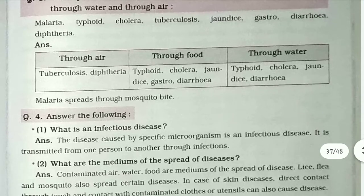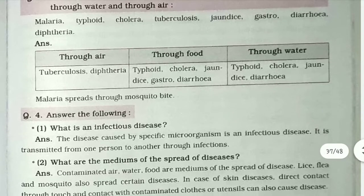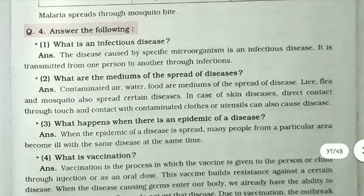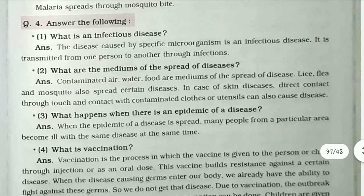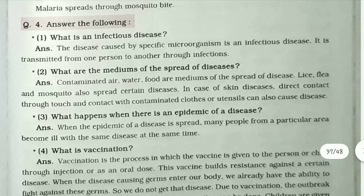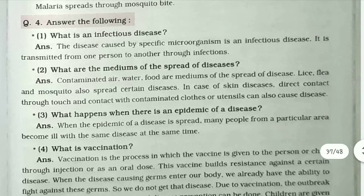Fourth question: What is an infectious disease? The disease caused by a specific microorganism is an infectious disease, and it is transmitted from one person to another through infection.